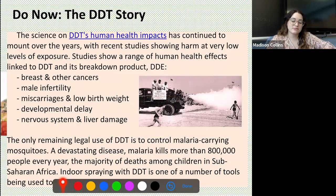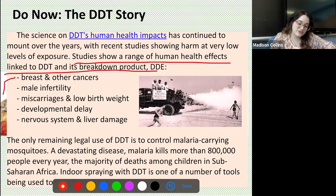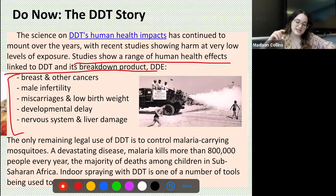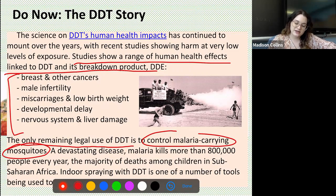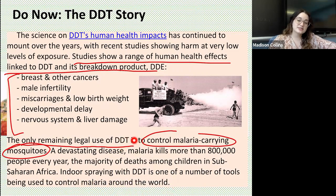The science on DDT's human health impacts has continued to mount, with recent studies showing harm at very low levels of exposure. Studies show a range of human health effects linked to DDT and its breakdown product DDE, including breast and other cancers, male infertility, miscarriages and low birth weight, developmental delay, and nervous system and liver damage. The only remaining legal use of DDT is to control malaria-carrying mosquitoes. Malaria kills more than 800,000 people every year, the majority being children in sub-Saharan Africa, and indoor spraying with DDT is still one of the tools used to control malaria around the world.